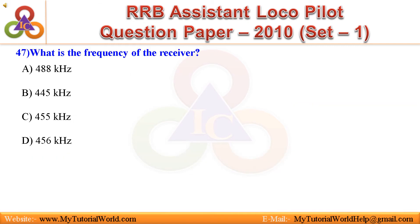Question 47: What is the frequency of the receiver? A. 488 kHz, B. 445 kHz, C. 455 kHz, D. 456 kHz. Answer is 456 kHz.